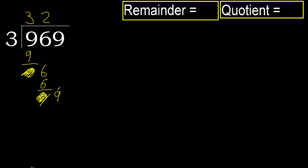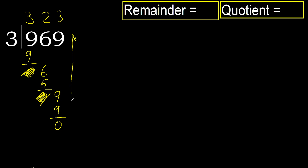Eliminate, bring down 9. 3 multiplied by 3 is 9. It is not greater. Subtract. Next. There is no next number, therefore finish it.